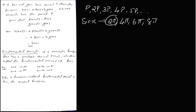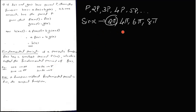Cos 2x has a period of 2pi. If you see the fundamental period of cos 2x, it is 1pi.